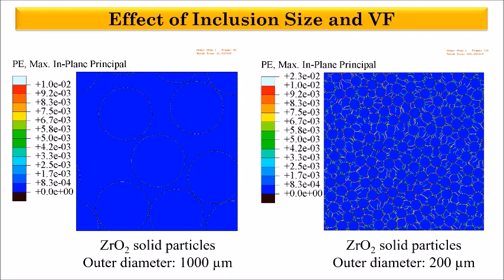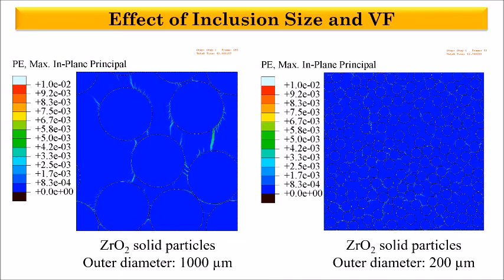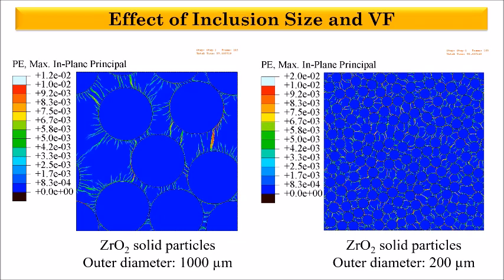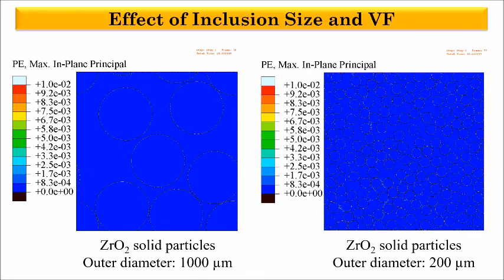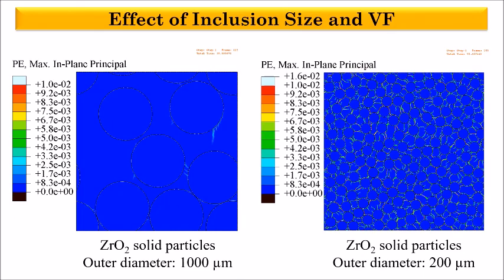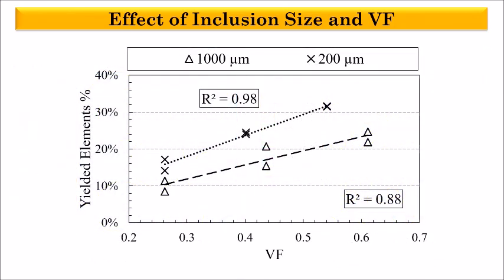As before, the percentage of yielded elements in these simulations is extracted in order to identify any contributions from volume fraction or the inclusion size distribution on the percentage of yielded elements. For both inclusion sizes, an increase in volume fraction of inclusions is accompanied by an upward trend in the percentage of yielded elements. However, between the two groups, the one with the smaller inclusions gives a larger percentage of yielded elements which is attributed to the increased contact area between inclusions and the matrix. Also, the higher slope for the smaller inclusions is attributed to the increase in the number of random locations where inclusions aggregate and therefore stress concentrations are caused.